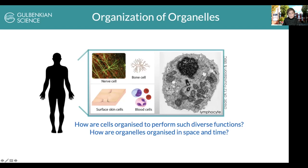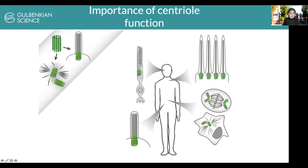These are very tiny structures — the centrioles shown here in a scheme. They are made of nine triplets of microtubules and have two very different personalities in our cells. They can form the centrosome, where you have two of them with surrounding material that anchors and nucleates microtubules, important for cell division, cell polarity, cell migration, and cell signaling. This structure can also tether to the membrane, where it nucleates the formation of cilia and flagella, important for signaling and motility, such as in the sperm flagella.